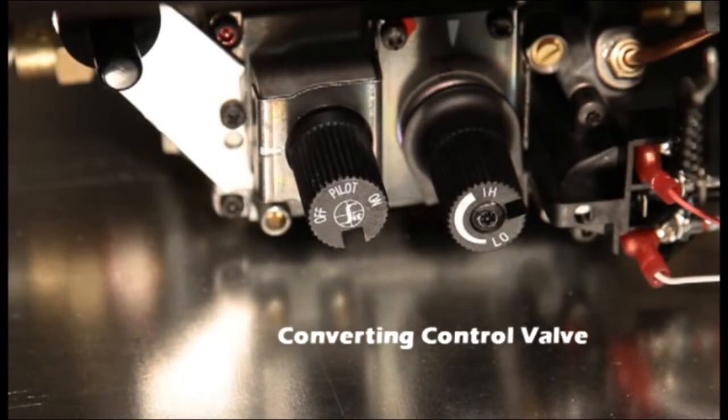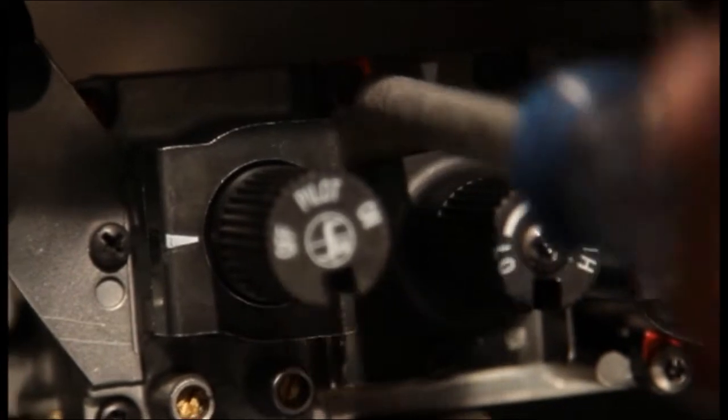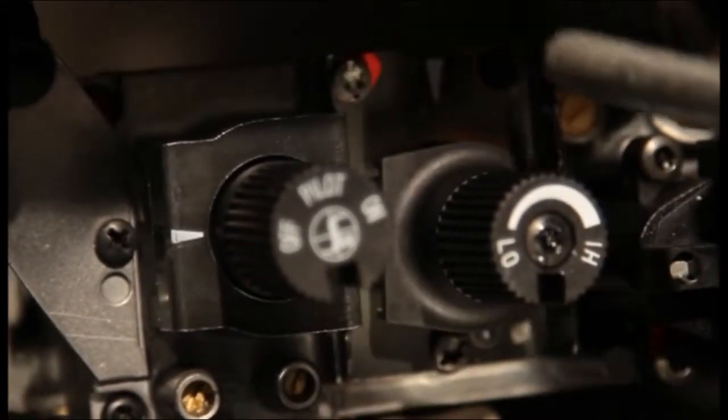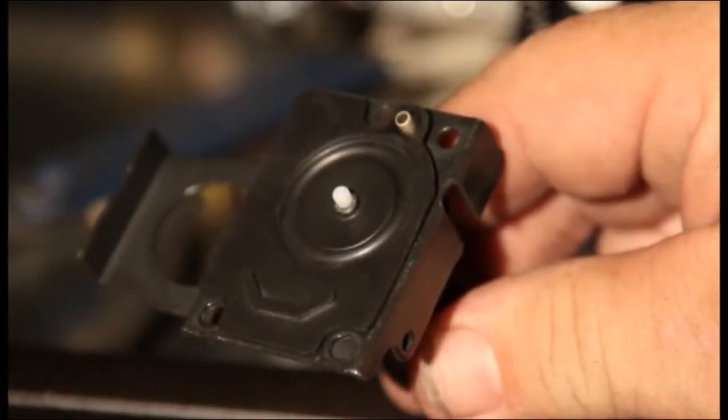Converting control valve. Using a Torx T20 or a slotted screwdriver, remove the three mounting screws, pressure regulator tower, gasket and diaphragm spring components.